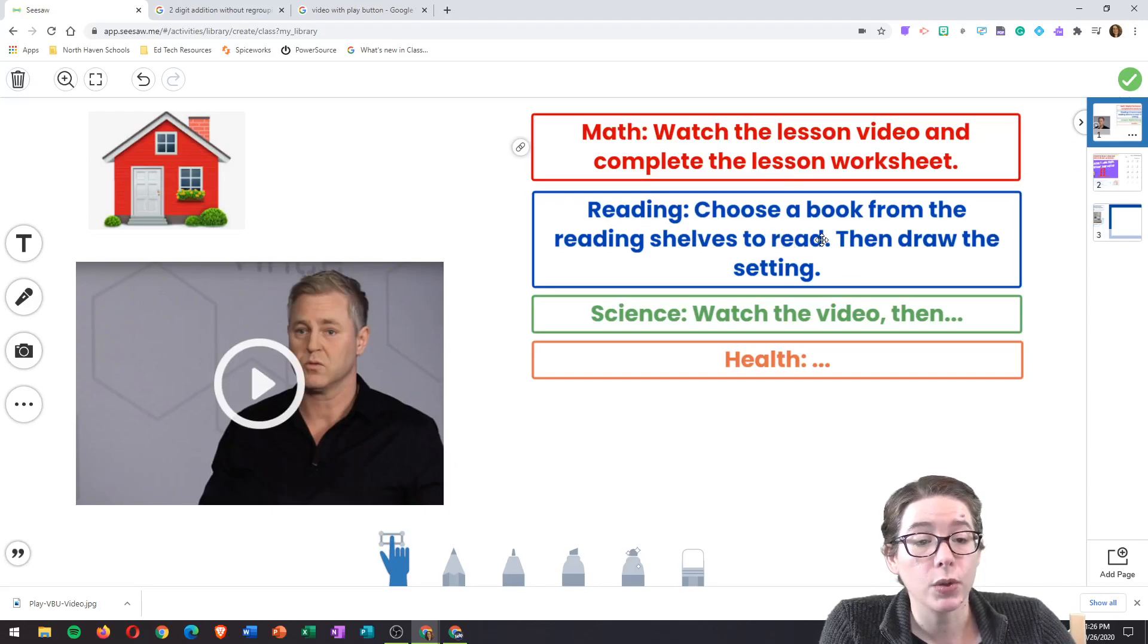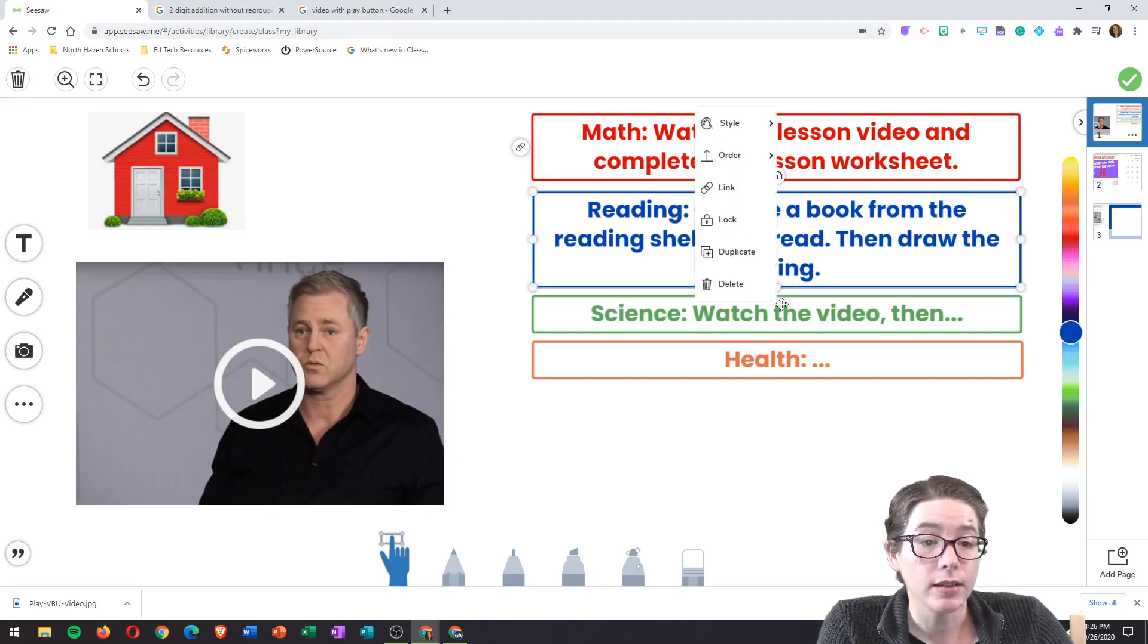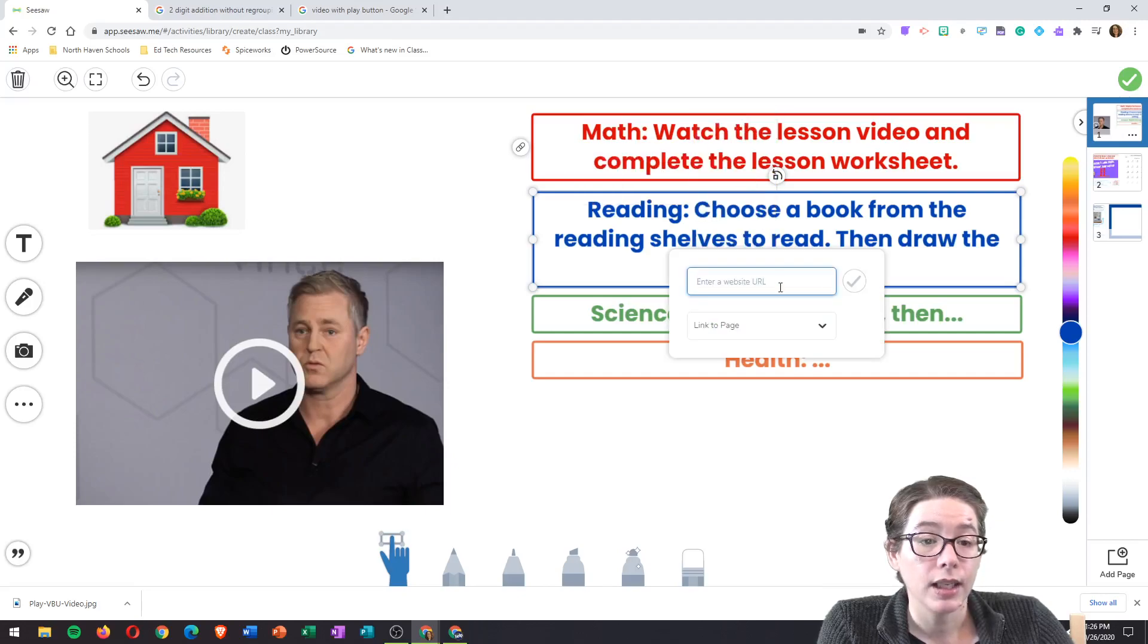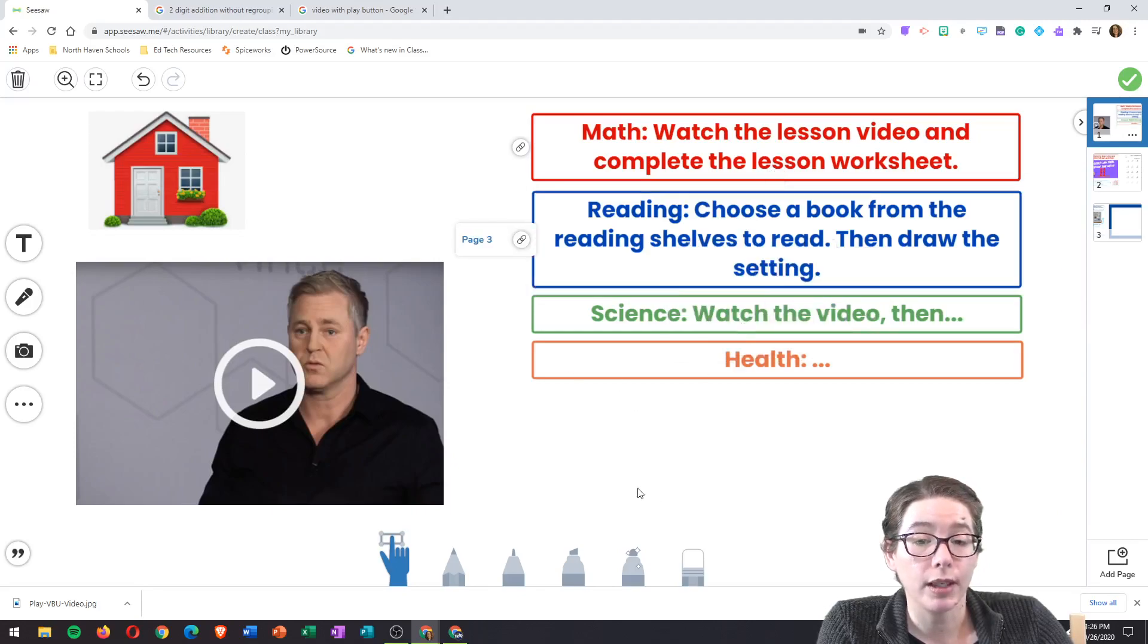The way you add that link is you click on the text box with the assignment, click the three dots, then click link. Here where it says 'link to page,' you're going to click that to open it and click the page number with that assignment on it.